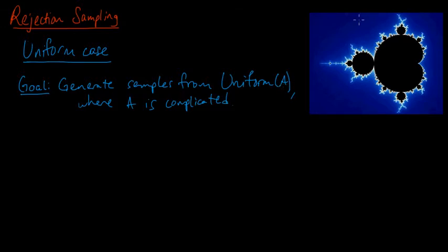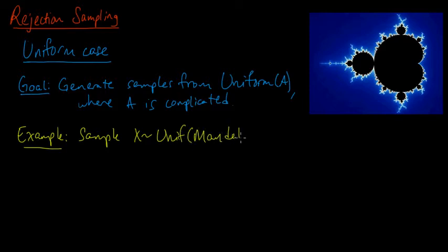And here's an example. Since we were talking about the Mandelbrot set earlier, I thought this would be a fun example. Sample some random variable uniform over A, where A is the Mandelbrot set. And this is the black pixels here in this square are the Mandelbrot set, and it's a super complicated set. It's extraordinarily complicated. So how would you, how could you do this? How is this possible?